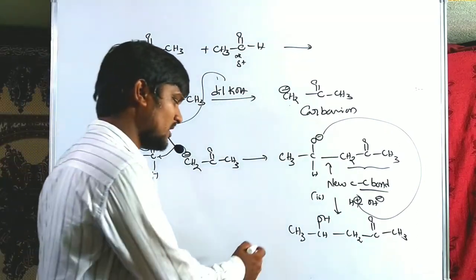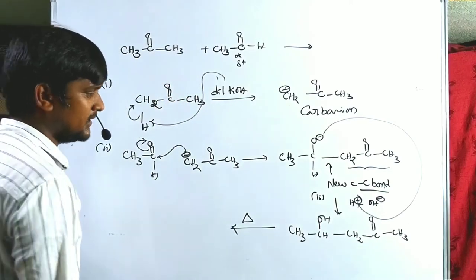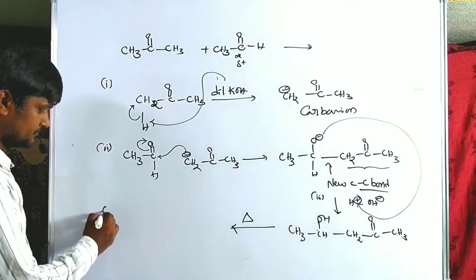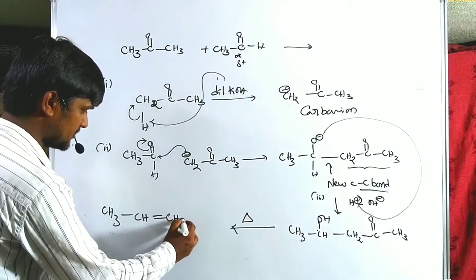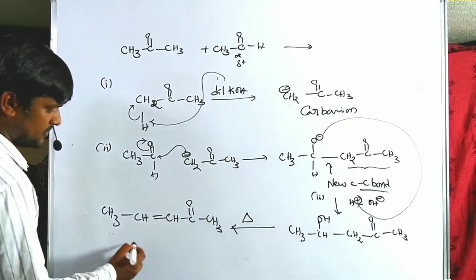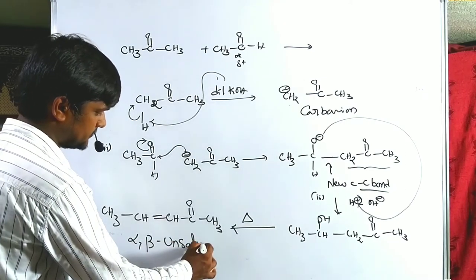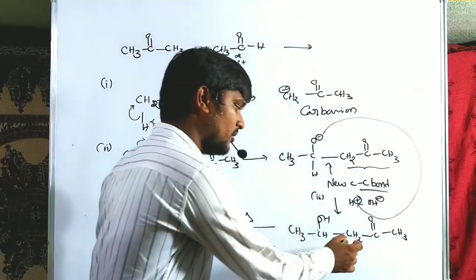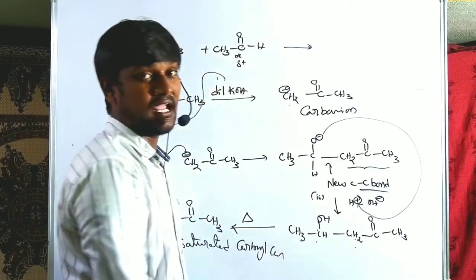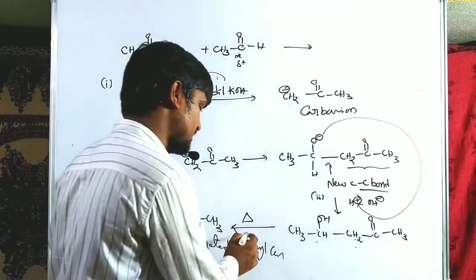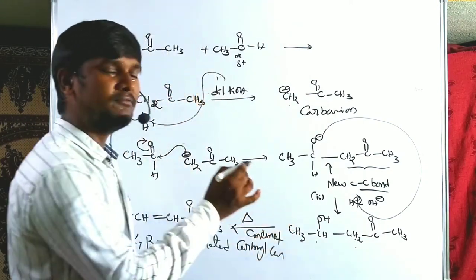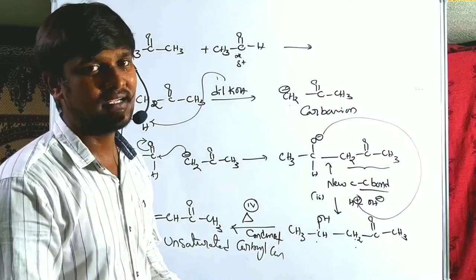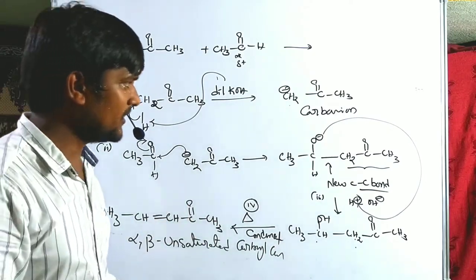In the third step, protonation takes place. With diluted KOH — KOH pellets dissolved in water — the base contains water, providing H⁺ and OH⁻. The O⁻ abstracts a proton, forming –OH, giving a beta-hydroxy carbonyl compound. In the fourth step, upon supplying heat, alpha-beta dehydration occurs: the alpha hydrogen and beta hydroxyl group are removed as water, forming an alpha-beta unsaturated carbonyl compound. This water elimination is the condensation step.